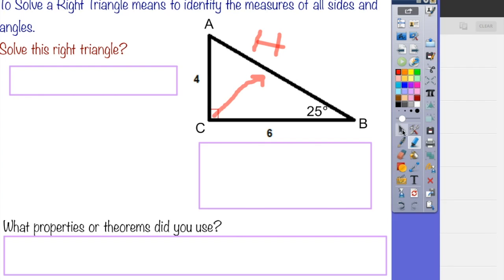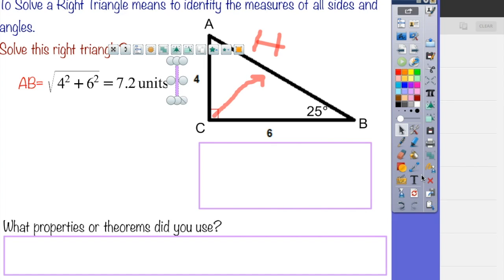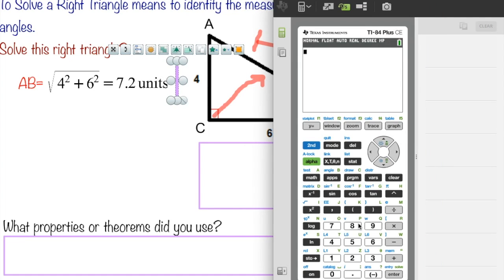Okay, so how are we going to solve this right triangle? Well, if we use the Pythagorean theorem for the side length, we're going to be looking for side length AB, and so we're going to take the square root of 4 squared plus 6 squared. Okay, and that's going to be equal to 7.2 units, and I can just easily do that in the calculator.